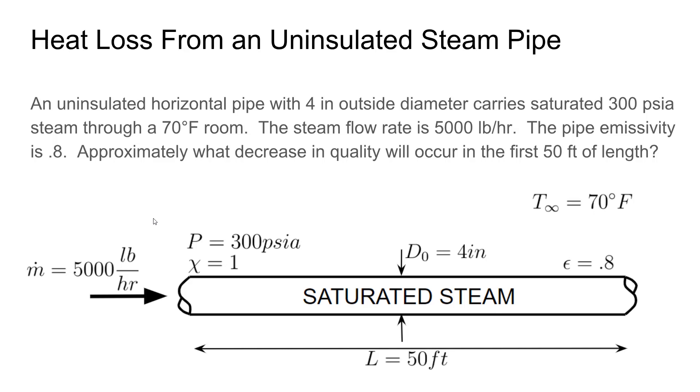We know the outside diameter of the pipe is 4 inches, and we only care about the heat loss in the first 50 feet of length. We know the ambient temperature of the room is 70 degrees, and we've been given the emissivity of the pipe, which is an important clue that the heat loss may be driven not only by convection, but also by radiation. We know there's no conduction since the pipe is not in direct contact with anything other than the surrounding air.